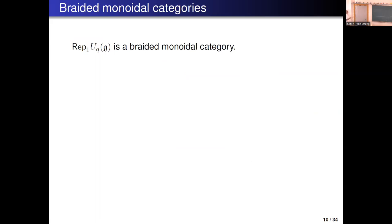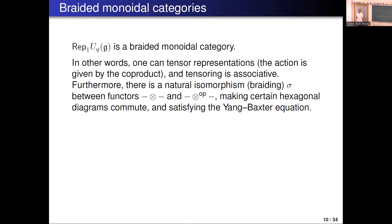Now I'm going to talk about braided monoidal categories. The category we have in mind is the finite-dimensional type 1 representations of U_q(G). You can tensor representations via the coproduct, and tensoring is associative. Furthermore, there is a natural isomorphism called braiding sigma between the bifunctor of tensoring and tensoring in the opposite order — it's not just the flip but something more complicated. There are hexagonal diagrams and the Yang-Baxter equation involved.